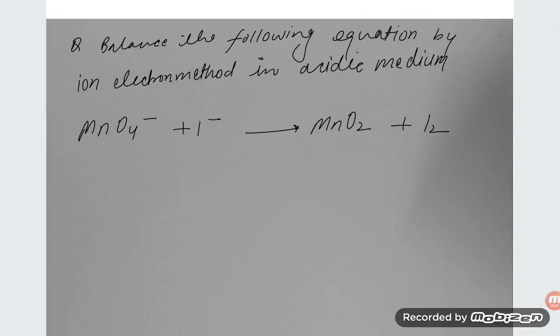Let's solve one more problem: balancing a redox reaction by the ion-electron method in acidic medium. Here, potassium permanganate ion is being treated with iodide, giving iodine and manganese dioxide. Let us try to solve it.